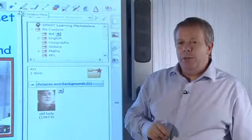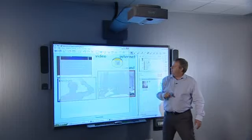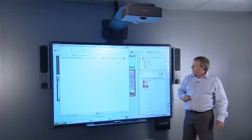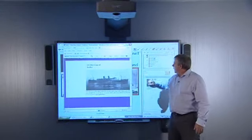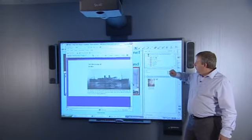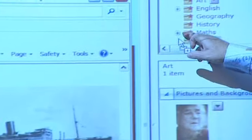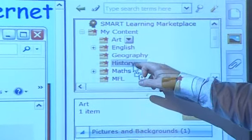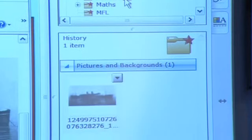Where else might I want to gather images from, resources from? The internet of course. Let's open up an internet page here, and when we have the image that we want in view we identify the folder we want it to go to, in this case I think history, and simply drag it straight from the internet into the folder I want it to go to and you see that it's gone in there for me.